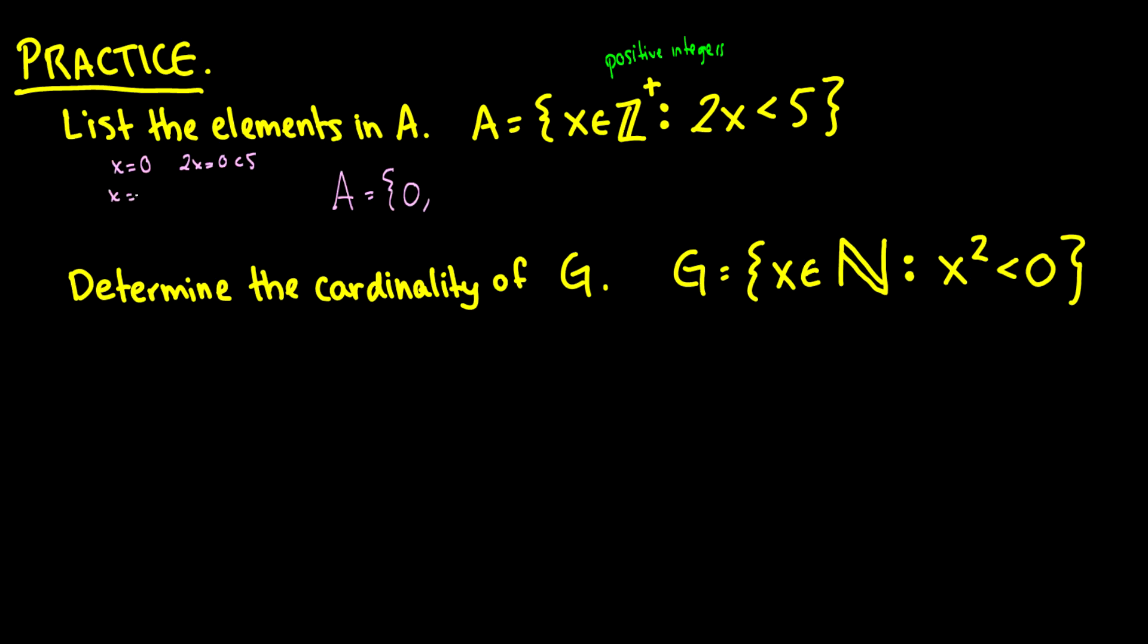Okay, now if x is 1, then 2x is going to be 2, which is less than 5. Okay, so 1 is in the set. Now let's set x equal to 2, then we have 2x is equal to 4, and that's also less than 5. So we can put 2 in there.